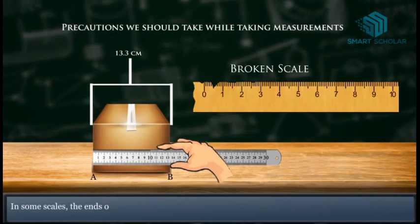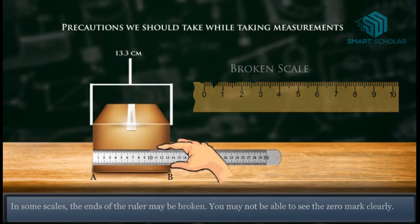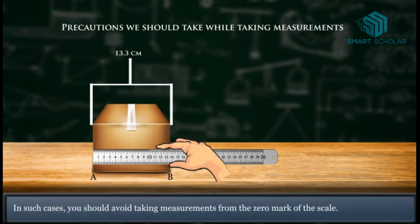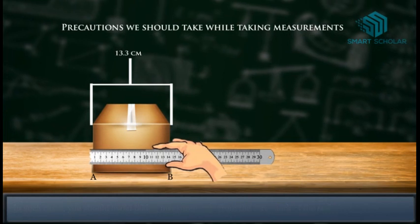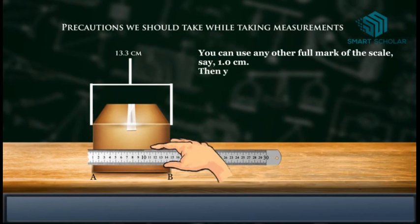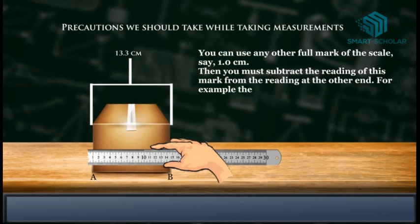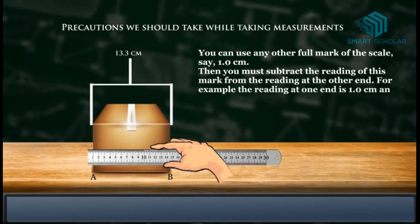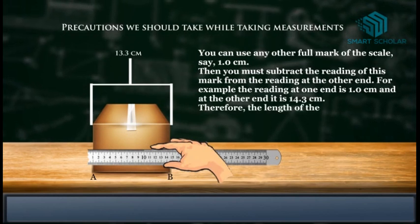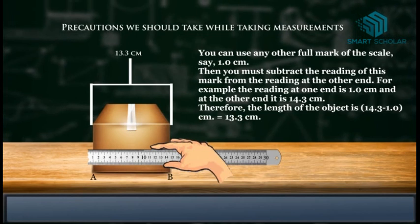In some scales, the ends of the ruler may be broken. You may not be able to see the zero mark clearly. In such cases, you should avoid taking measurements from the zero mark of the scale. You can use any other full mark of the scale, say 1.0 centimeters. Then you must subtract the reading of this mark from the reading at the other end. For example, the reading at one end is 1.0 centimeters and at the other end it is 14.3 centimeters. Therefore, the length of the object is 14.3 minus 1.0 centimeters, which gives us 13.3 centimeters, as shown in the diagram.